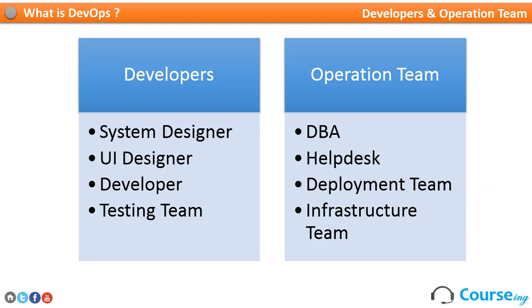DevOps is a word that comes from 'developers' and 'operation team' — Dev from developers and Ops from operations. The developer team includes people who design the system, UI designers who design the user interface, people who write the code, and also the testing team, because they help developers fix issues and troubleshoot. Then we have the operation team.